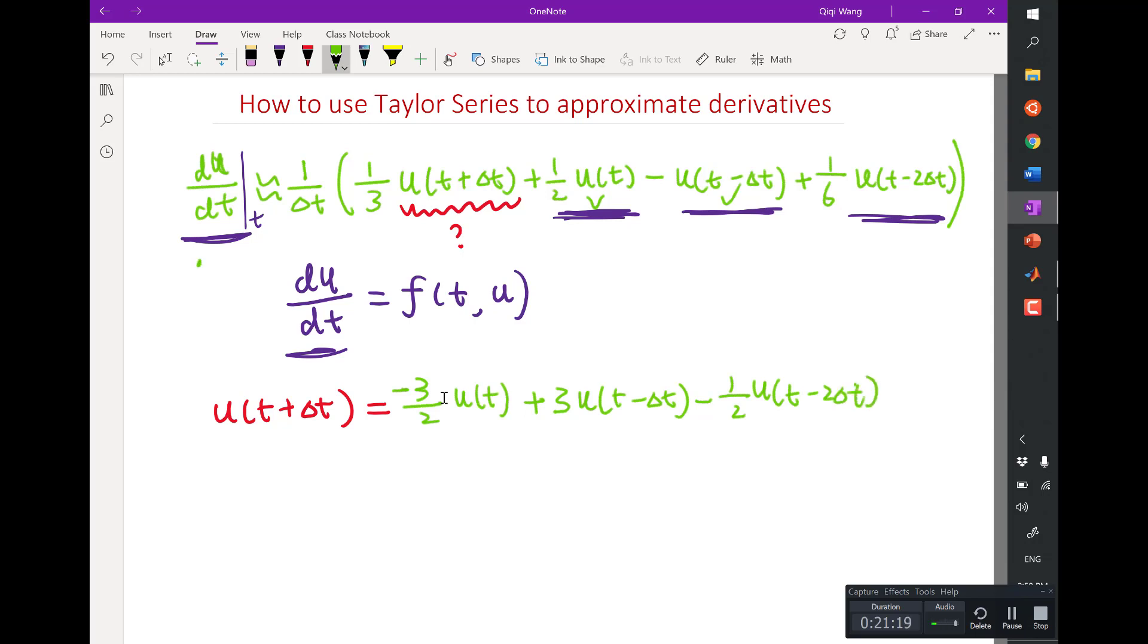So I will have plus 3 delta t times f of t u. Here, u means u at time t. So that's how you turn a derivative approximation into a usable scheme.